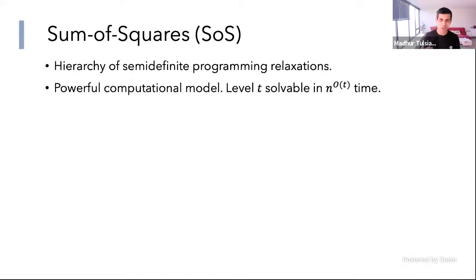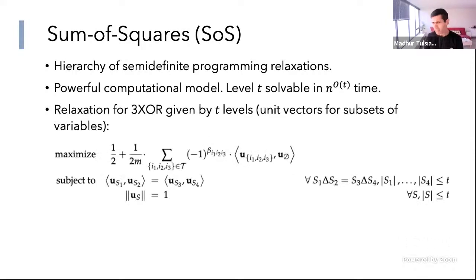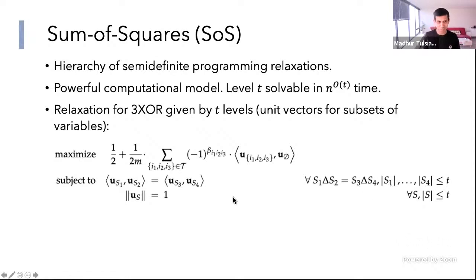The sum of squares hierarchy can be thought of as a computational model, in particular for constraint satisfaction problems. The hierarchy comes in levels, and the t-th level can be solved in time n to the order t. The specific relaxation for 3XOR is parameterized by this parameter t, and there is a unit vector for every subset of variables of size at most t. You can think of it as an algorithm which does all kinds of local reasoning up to a locality of size t, but it also does spectral things.